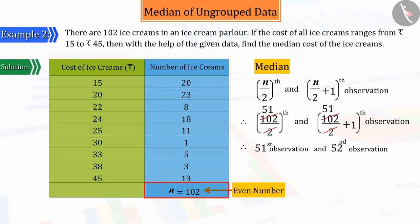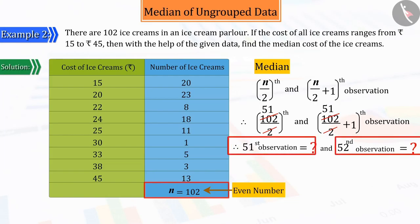From which we can tell that the median will be the average of the 51st and 52nd observations. But here, we do not know the value of both these observations. So, can you tell what we need to do to know the values of these observations?